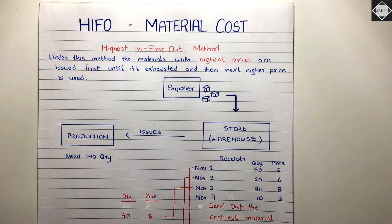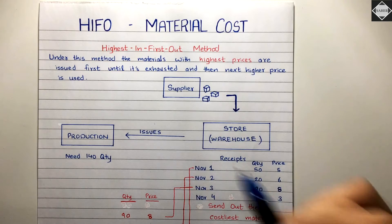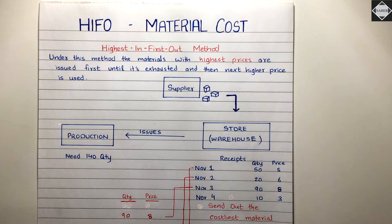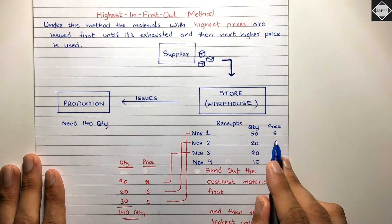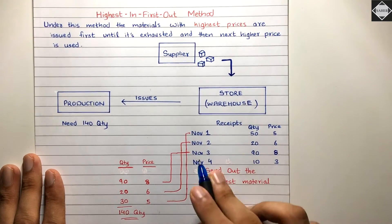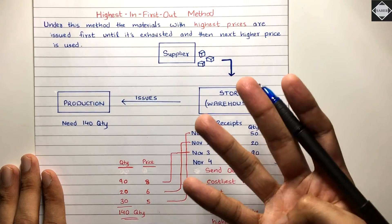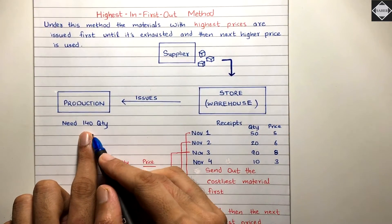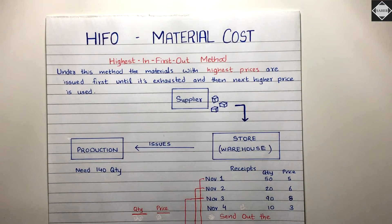Let's understand what HIFO valuation says. The HIFO concept is really simple — whatever has come in at the highest price, you have to send that out first: Highest In First Out. Let's take an example. Say you purchase raw materials from your supplier; they come into your warehouse and those are called receipts. You got Lot 1: 50 quantity at ₹5 each, Lot 2: 20 quantity, Lot 3: 90 quantity, Lot 4 at different prices — 5, 6, 8, 3. Now the production department has asked for 140 quantity of materials, and the question is: at what price do you issue them?